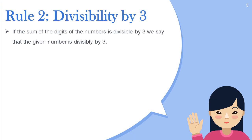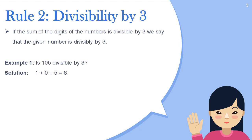Now come to rule number two: divisibility by three. If the sum of the digits of the number is divisible by three, we say that the given number is divisible by three. For example, is the number 105 divisible by three? We add up all the digits: one plus zero plus five. We get the sum six. Six is divisible by three, therefore 105 is divisible by three.